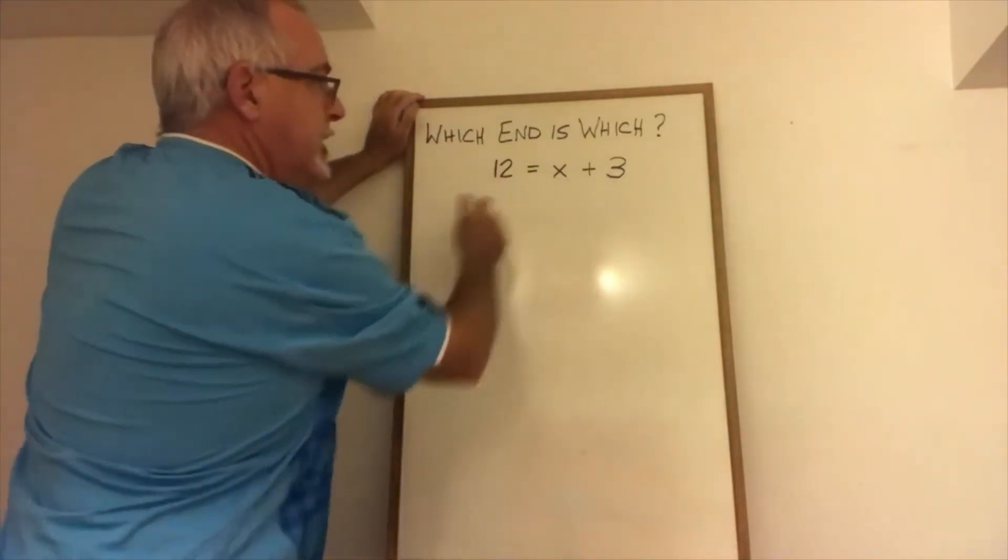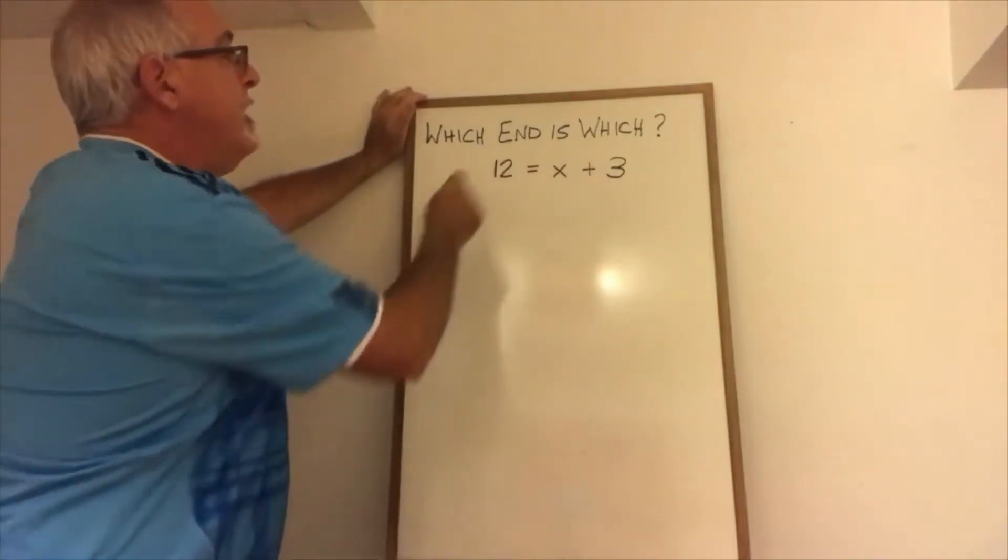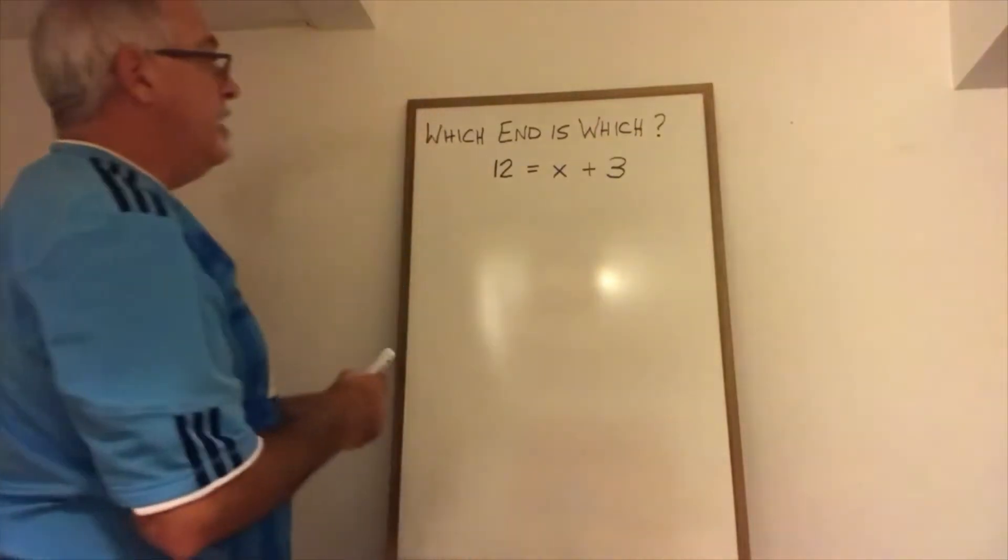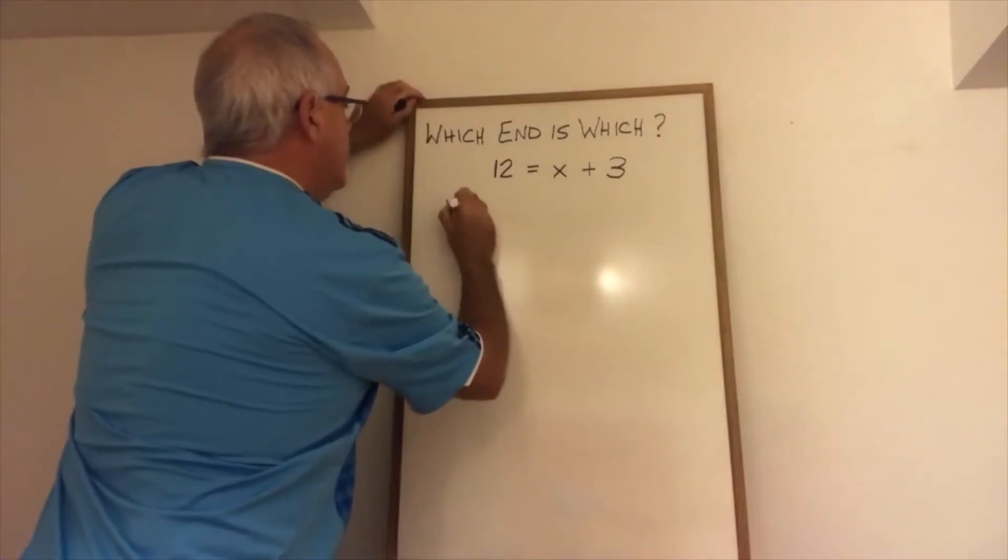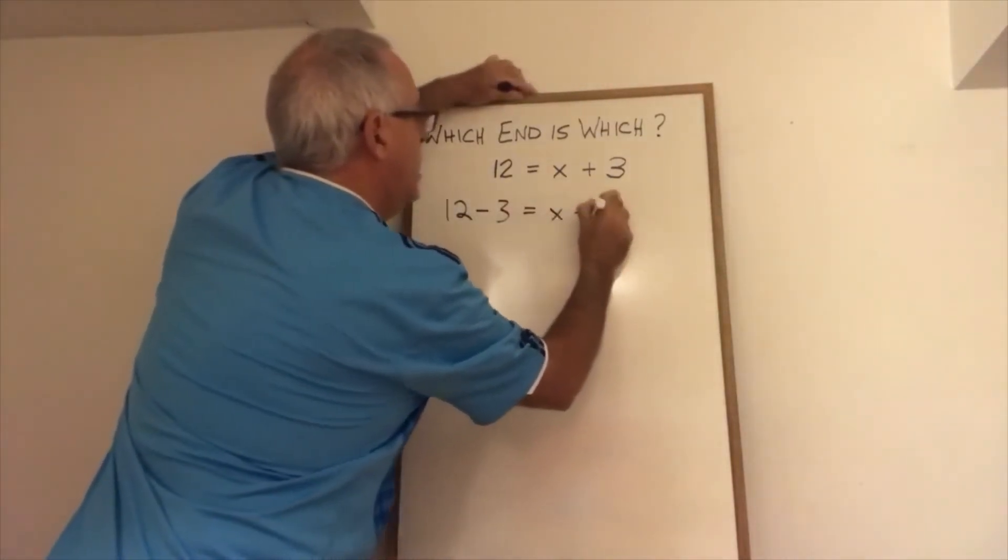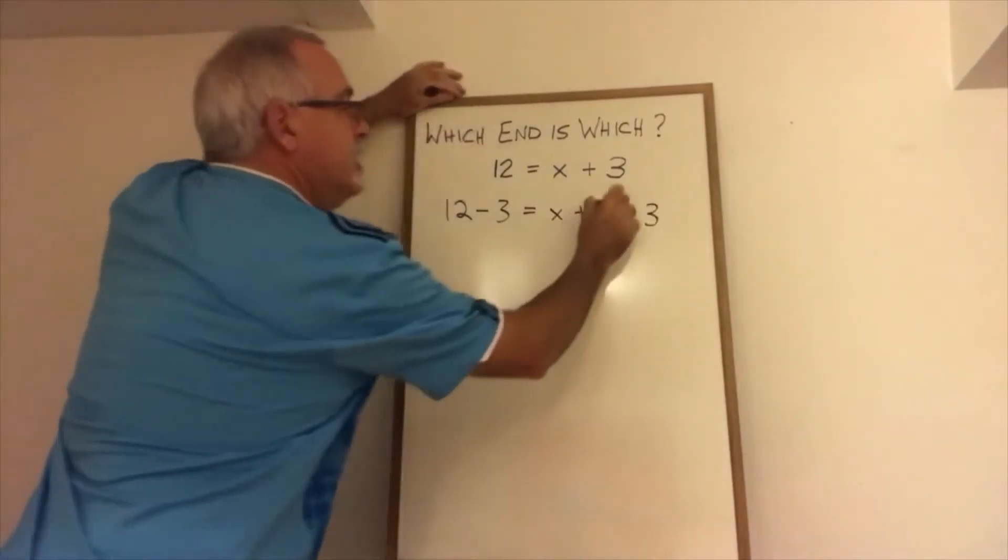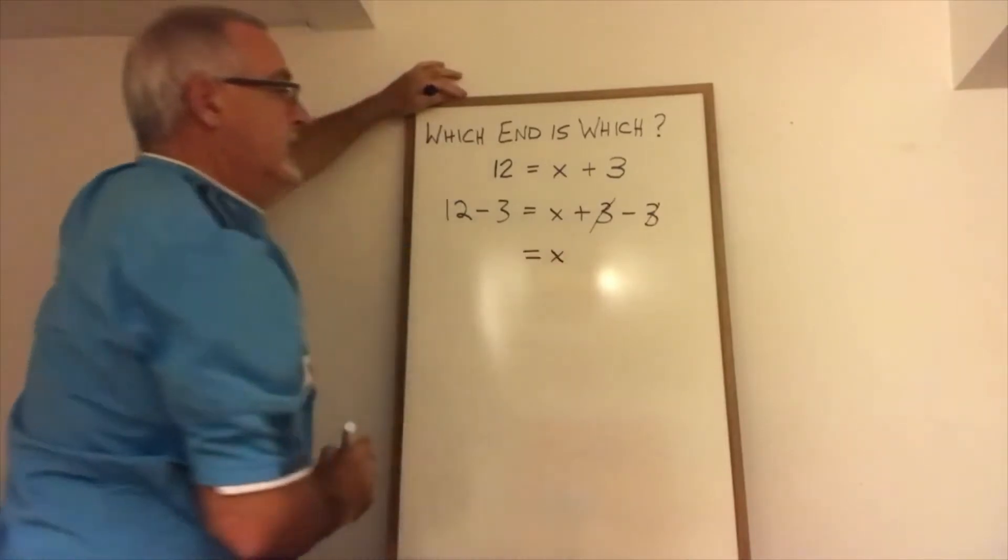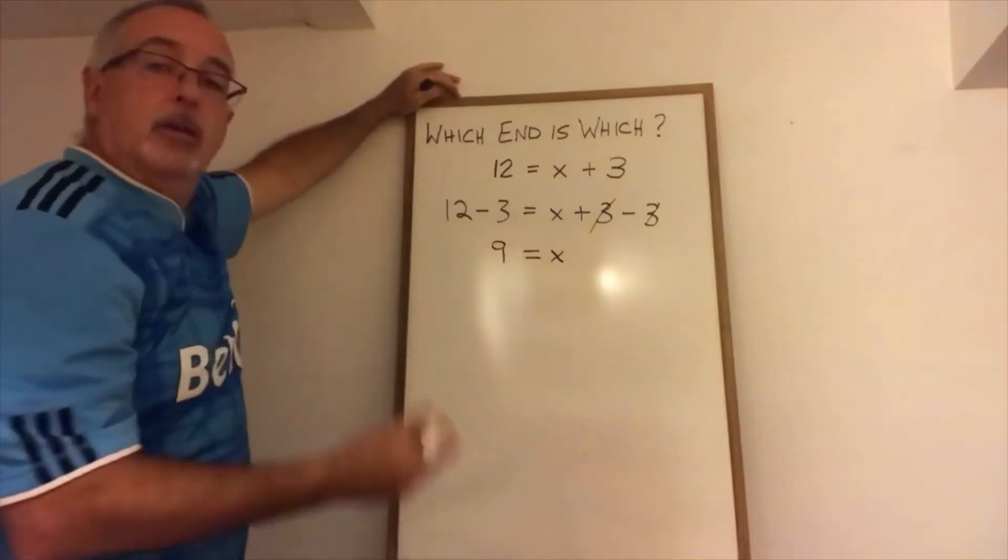Anyway, when we have this equation, for instance, and we're doing algebra to it, we have 12 equals X plus three. The X is on the right side of the equals, but I don't care. I can do my algebra. I know that if I subtract three from both sides, these threes will cancel. And that isolates my X on one side of the equal sign. And since 12 minus three is nine, I have nine equals X as my answer.